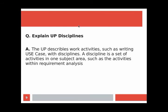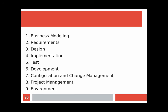Next question: explain UP disciplines. UP describes work activities — originally called workflows — within disciplines. A discipline is a set of activities in one subject area, such as the activities within requirement analysis. In the UP, an artifact is the general term for any work product: code, web graphics, database schema, text documents, diagrams, models, and so on. There are several disciplines in the UP: business modeling, requirements, design, implementation, tests, development, configuration and change management, project management, and environment.